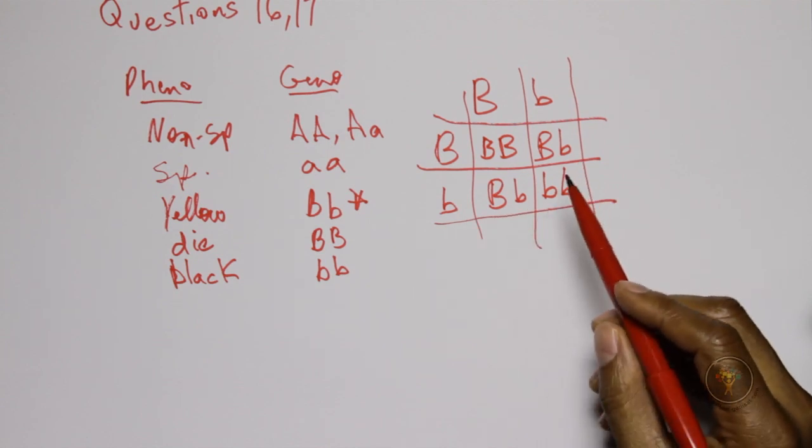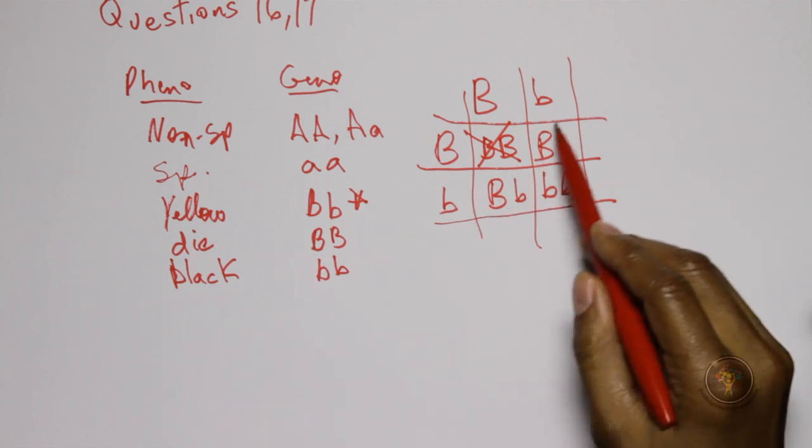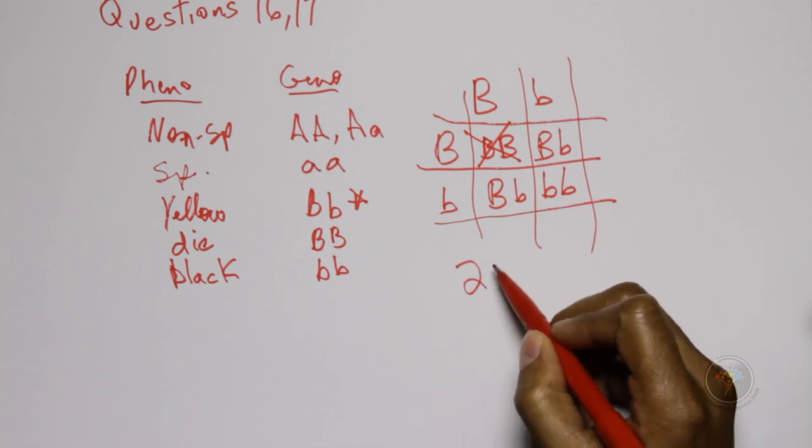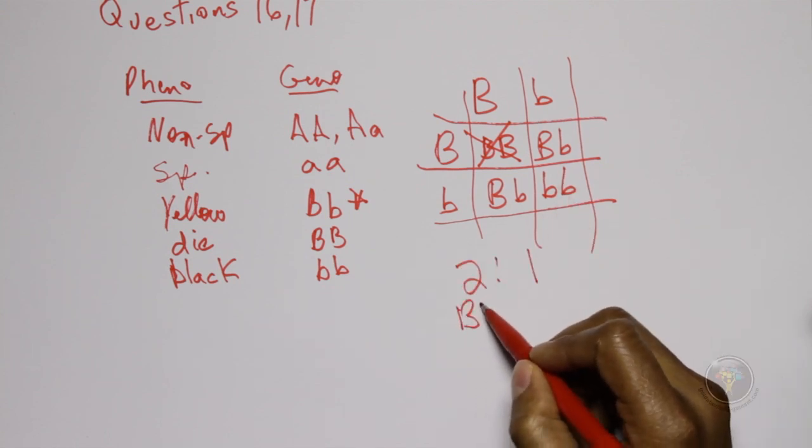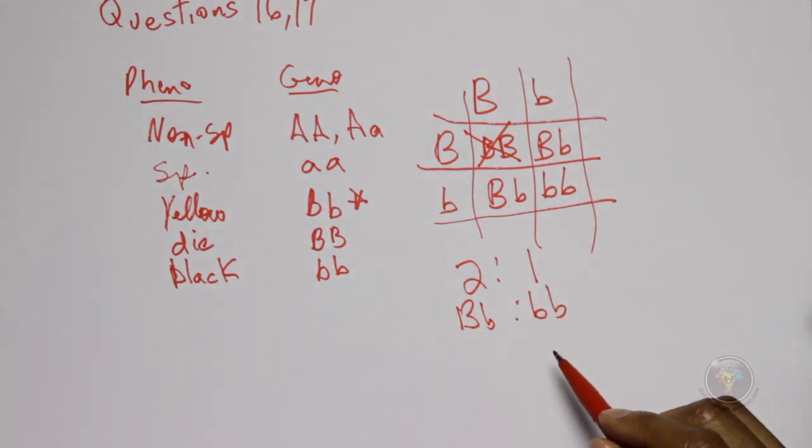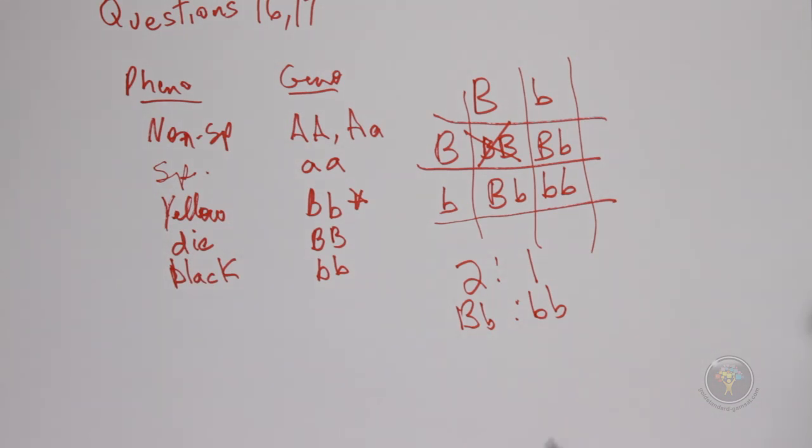And so we know that these will die, BB will die, so we don't look at these anymore. And then we look at the ratio of what we're left with. We have two to one of Bb and small bb. So that's what we have, so this is the ratio. That means we have two yellow for every one black, so that's the ratio and that's answer choice C for 16.